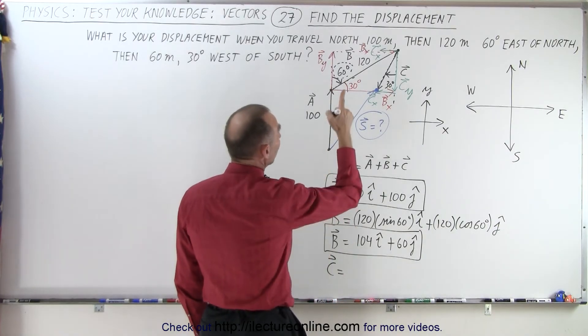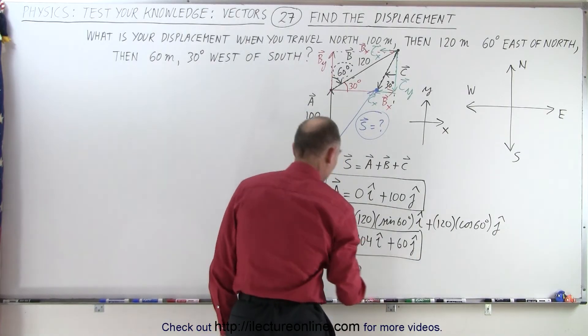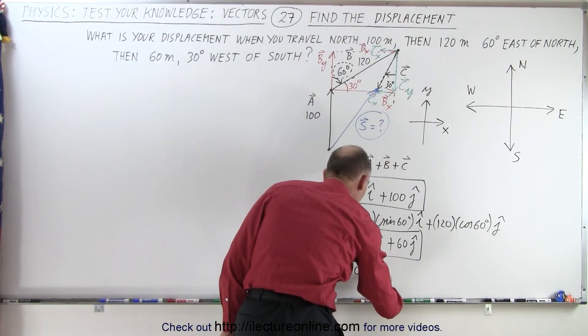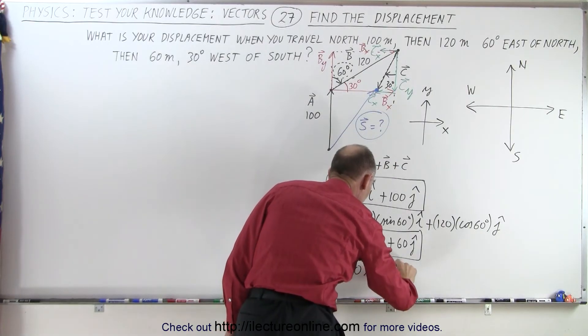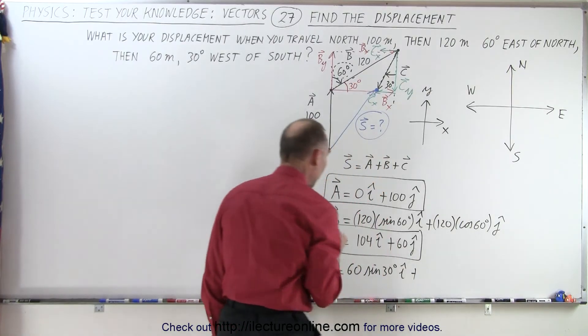And the X component will be opposite to the angle 30. That would be the sine of 30 degrees in the I direction. That would be plus, oh, now be careful here.